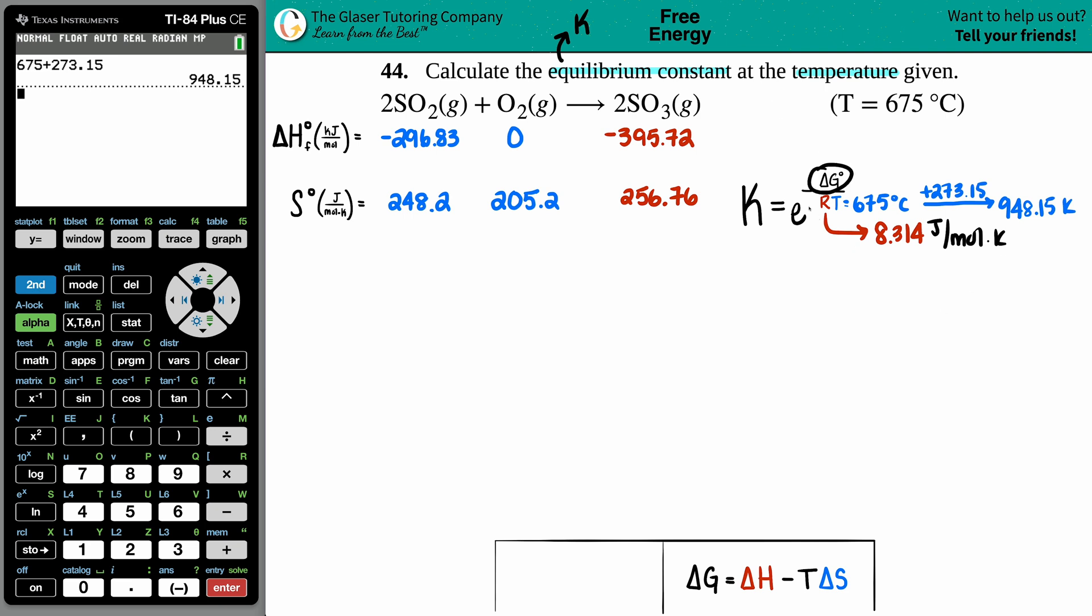Now we have to find the ΔG. You might say, okay, I see it's standard, so I can go to the back of the textbook, find the ΔG's for each component, products minus reactants. But the problem is those ΔG values are at 25 degrees celsius. We're at 675, so the ΔG value will change because we jacked up the temperature.